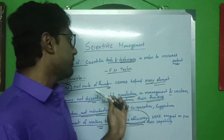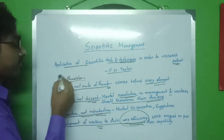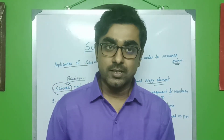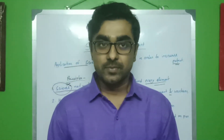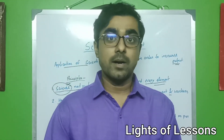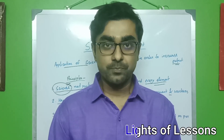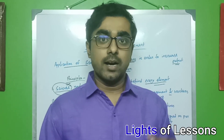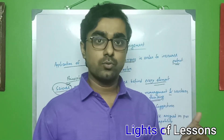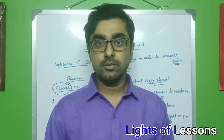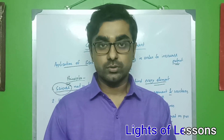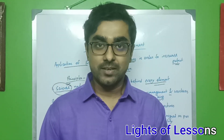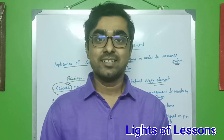So this is all about scientific management theory and the different principles proposed by F.W. Taylor. I think you have understood. If you have any doubts, definitely go to the comment box. In the description box you can find a mail ID. In my next video, part 2 of scientific management theory, we will see the different scientific management tools and techniques. So till then, stay tuned with us. Thank you.